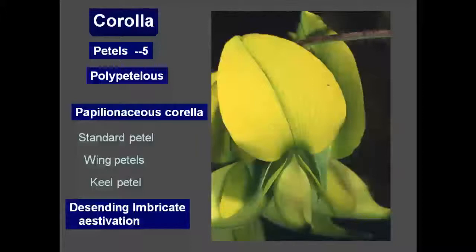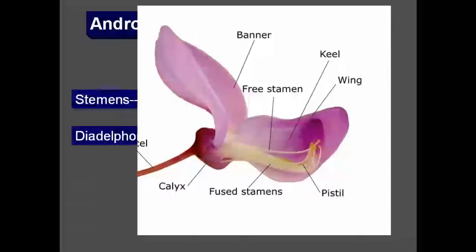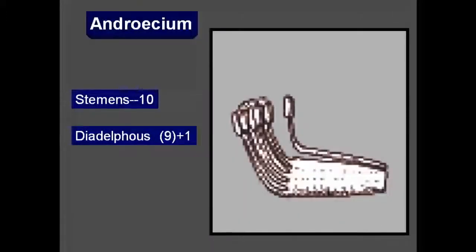This Papilionaceous corolla is useful for attracting insects and also for enabling cross-pollination via the piston mechanism. The corolla of Fabaceae creates specific adaptations for this purpose.